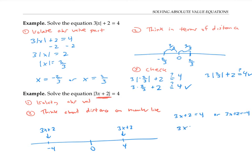So this becomes 3x equals two, or x equals two thirds. And over here, I get 3x equals minus six, or x equals minus two.